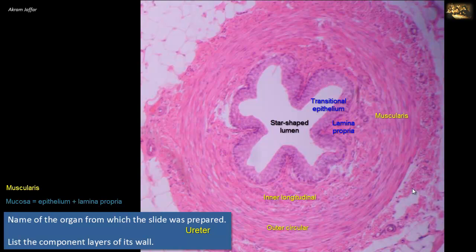So we have mentioned three layers: the mucosa, muscularis, and the third and outermost layer is the adventitia, which is made of loose connective tissue containing blood vessels, lymphatics, and nerves.